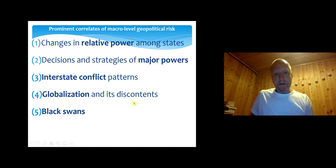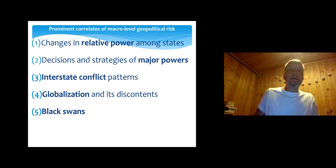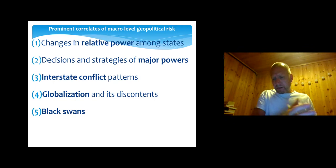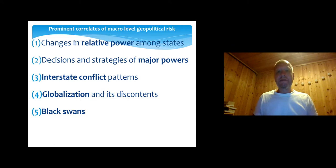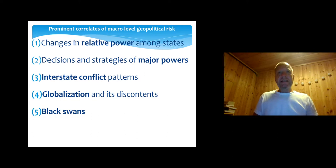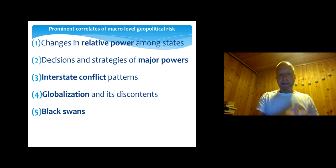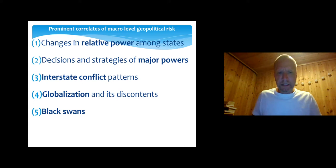The fourth prominent correlate of geopolitical risk is economic globalization and its discontents — the opposition against globalization. After the Cold War ended, there was a clear rise in economic globalization: increased cross-border trade and investment, which created prosperity on average. Countries and people in most regions — America, the EU, large parts of Asia — became richer on average.